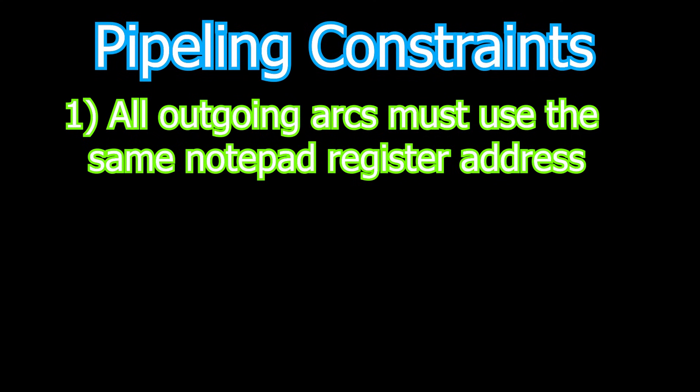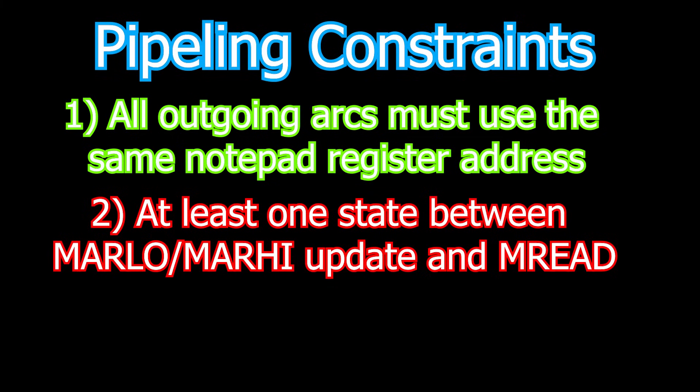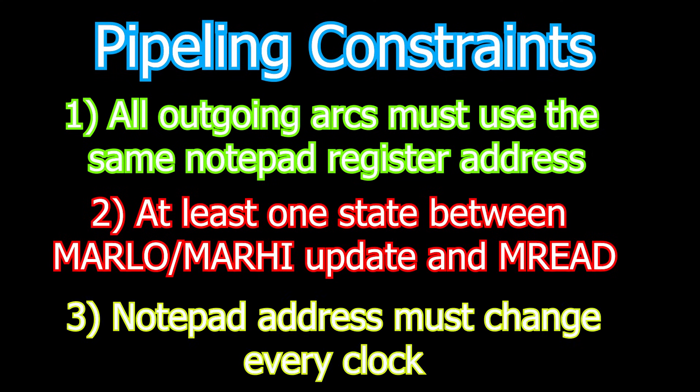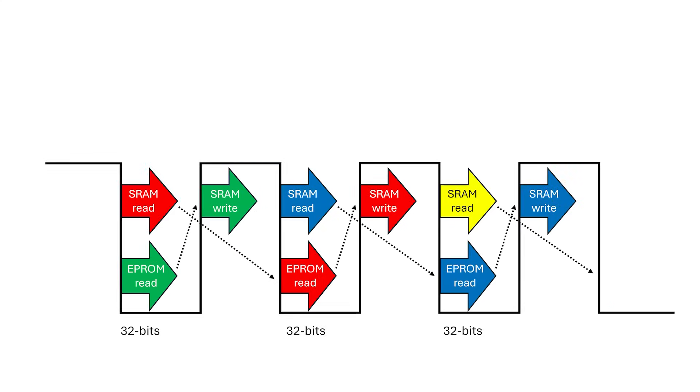The trade-off? Yes, this introduces a few more dummy states into the state machine. Yes, we need to make sure that there's at least one clock cycle delay between updating MA-high or MA-low and performing a read, which does add bubbles into the pipeline. Finally, we need to use a different notepad address every clock cycle, but that should be the case anyway. But the payoff, a dramatic speed up in the cycle time, and the Turing machine is starting to behave more like a modern pipeline CPU.